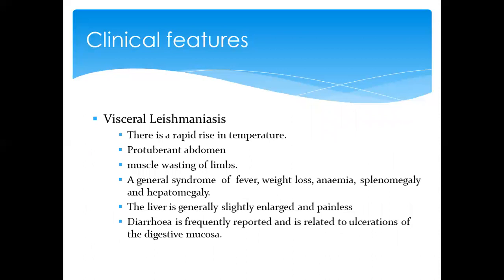Clinical features depend on the type of leishmaniasis. Visceral leishmaniasis — since the disease is in the internal organs — presents with temperature rise, protuberant abdomen, muscle wasting of the limbs, a general syndrome of fever, weight loss, splenomegaly, hepatomegaly, and sometimes diarrhea.